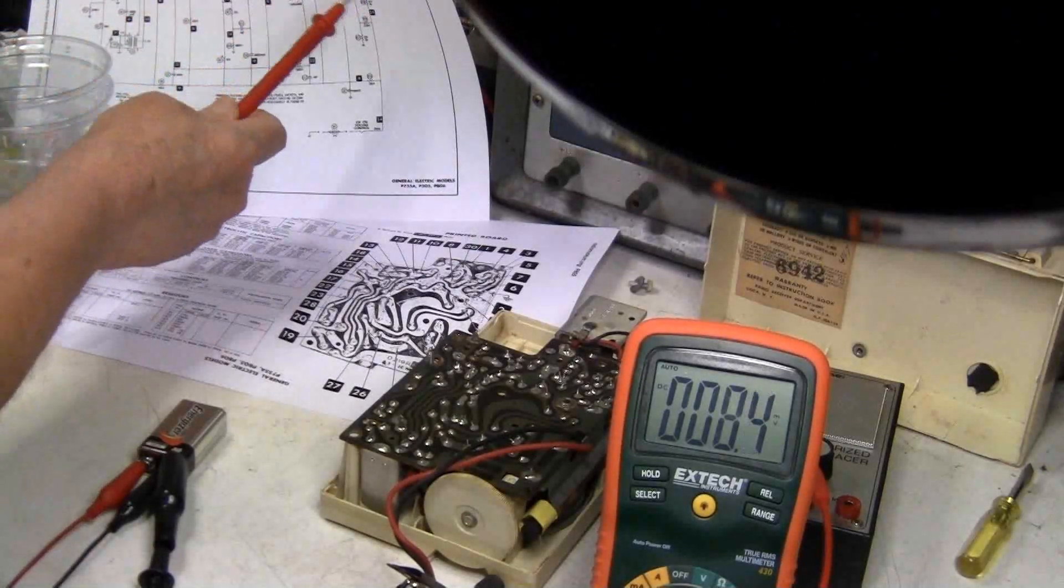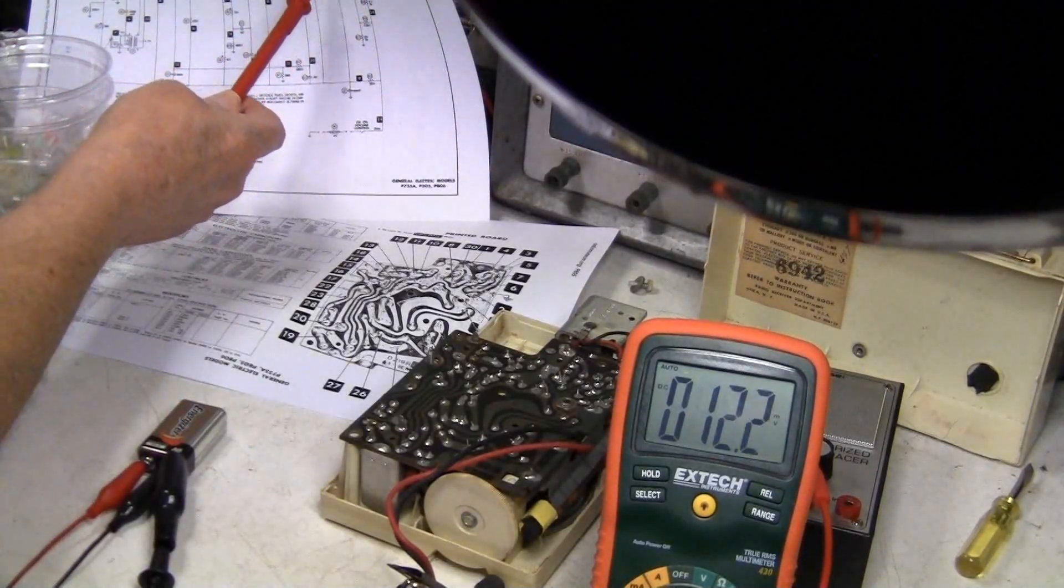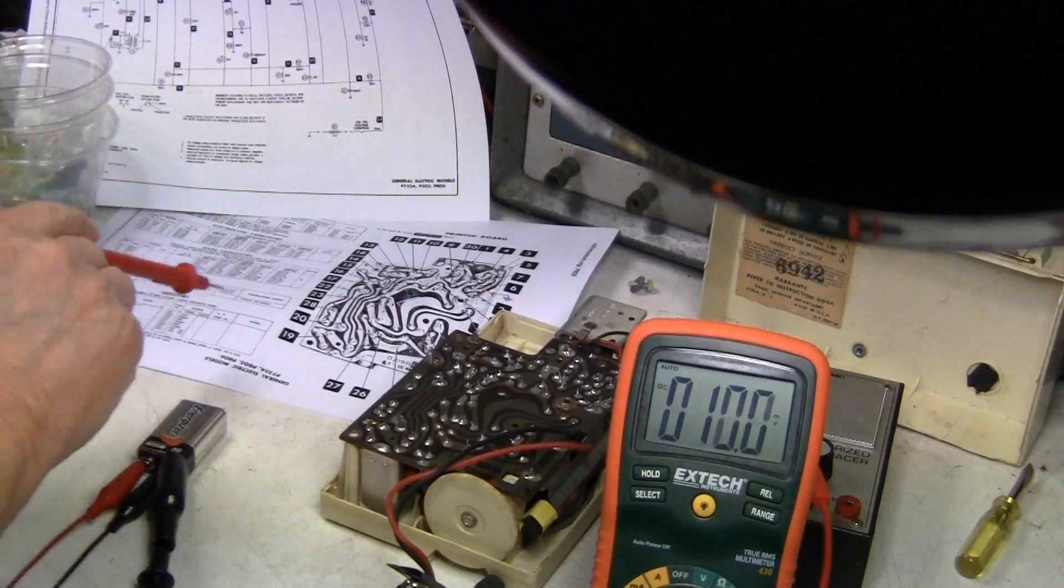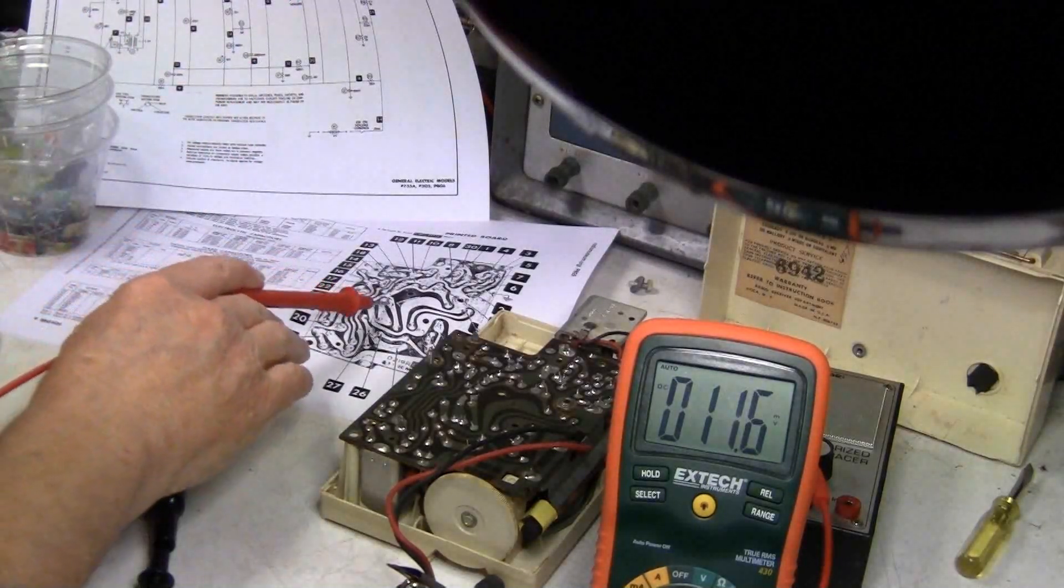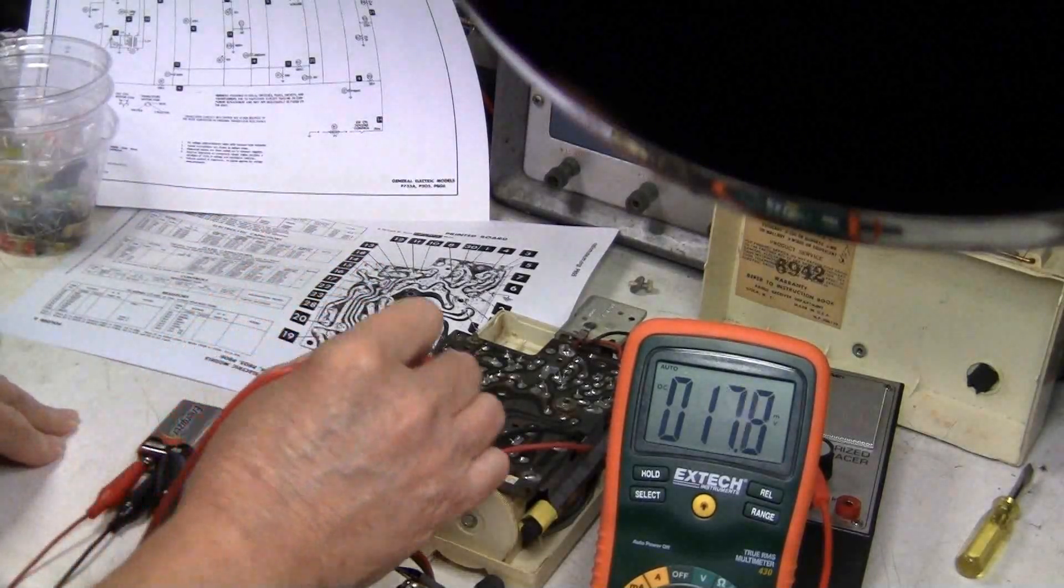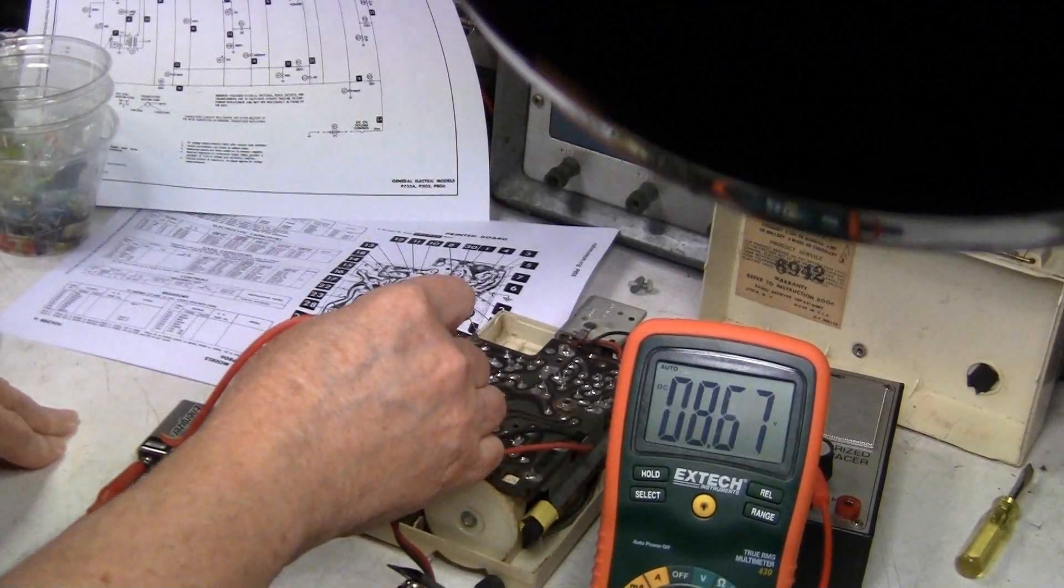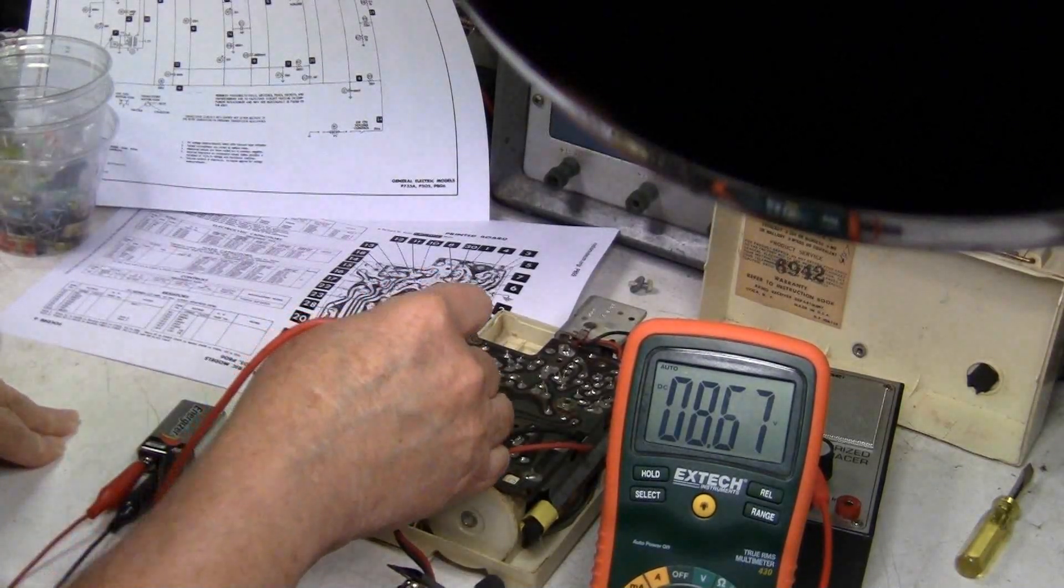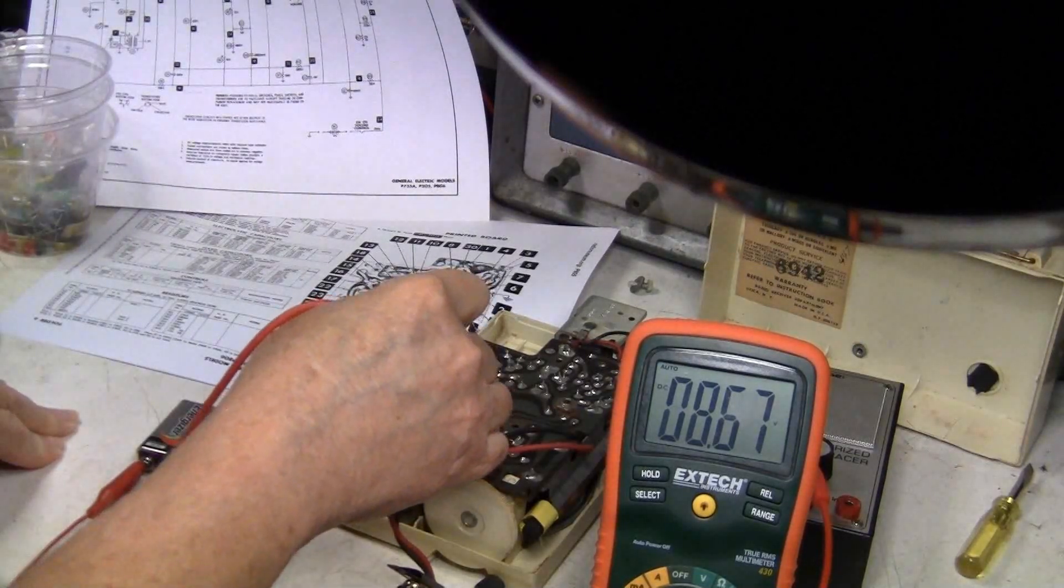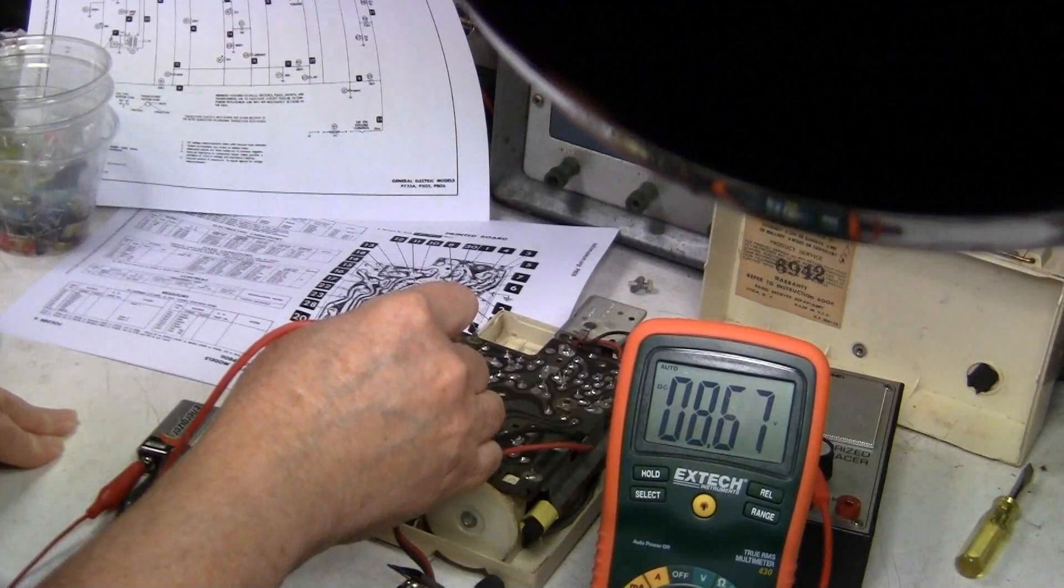I'm going to start right here at 22, the base of this transistor. And 22 says it's right here. That's right here. It's supposed to be about 8.4 volts. So that's pretty close.